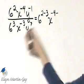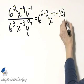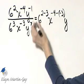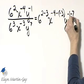then what is the denominator exponent? Negative 3. And then we have y raised to the power of negative 1 minus 7. Negative 1 minus 7.